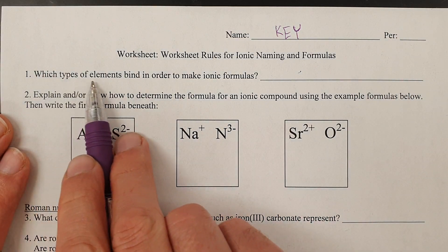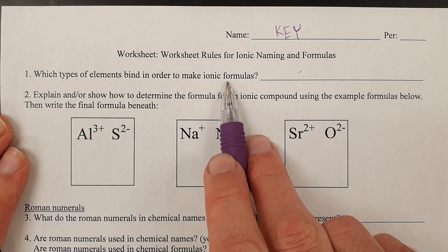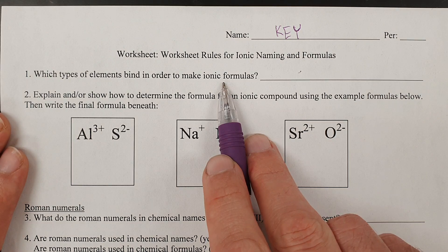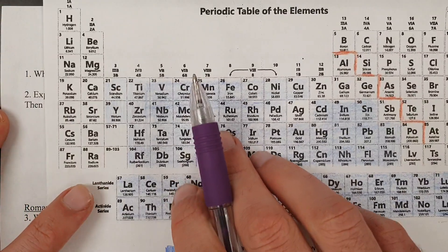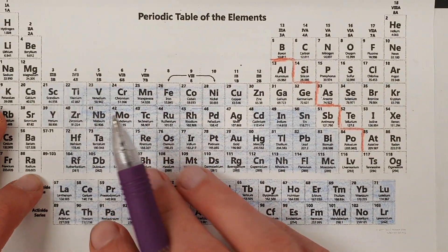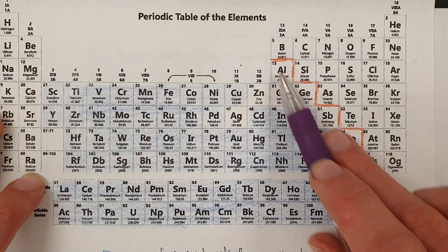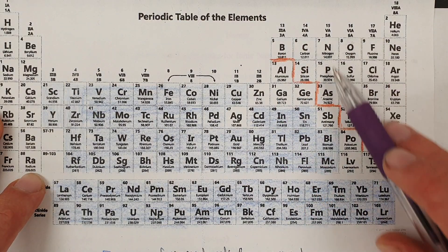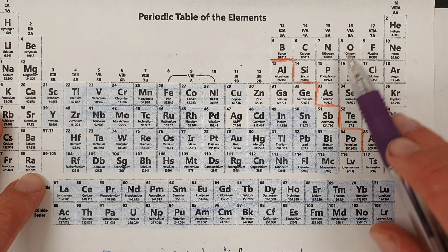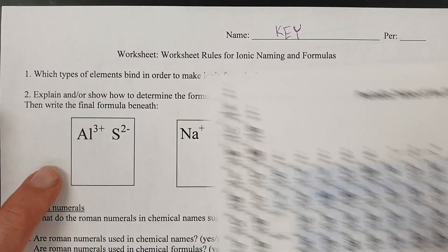The first question: which type of elements bind in order to make ionic formulas? That is metals and non-metals. Metals are anything on the left side of the staircase that separates the metals and non-metals. Non-metals are over here on the right, metals are over here on the left.